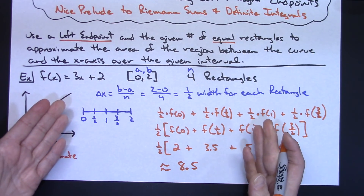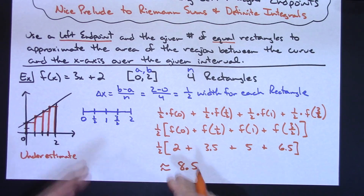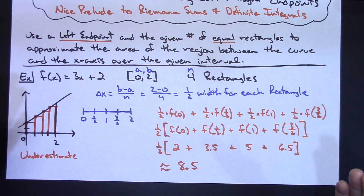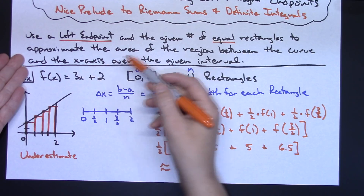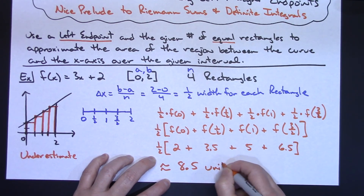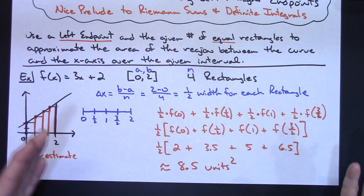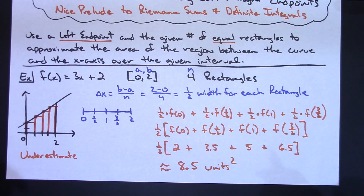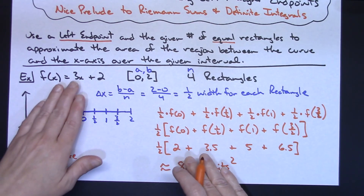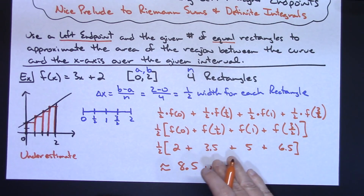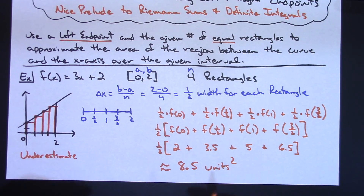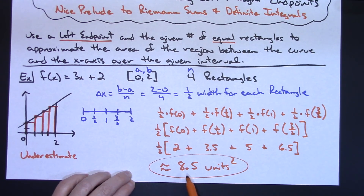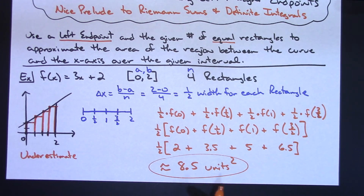Since I'm not referring to a Riemann sum or definite integral — I'm just approximating the area — it's appropriate to label this as 8.5 units squared. This is an underestimate of the area under the curve using four equal rectangles and left endpoints.